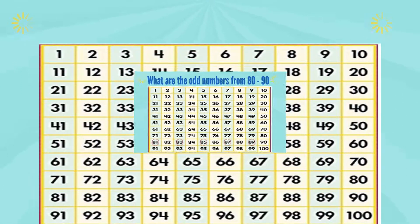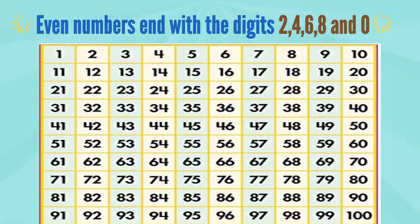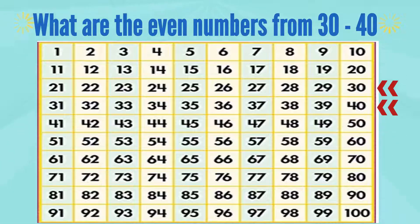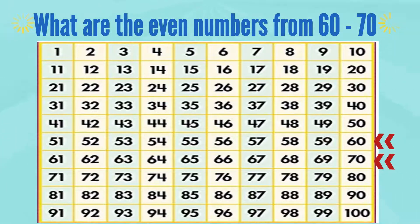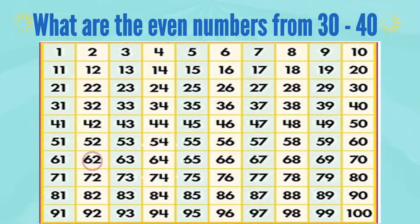Remember that even numbers end with the digits 2, 4, 6, 8, and 0. What are the even numbers from 30 to 40? 32, 34, 36, and 38. What are the even numbers from 60 to 70? 62, 64, 66, and 68.